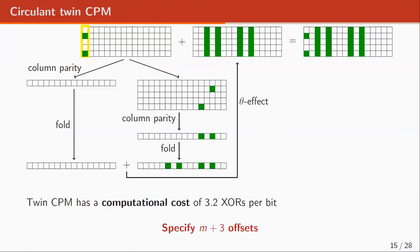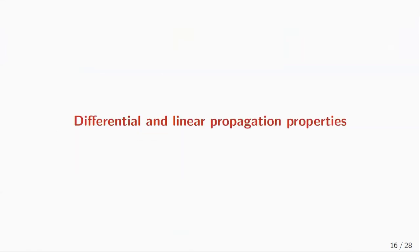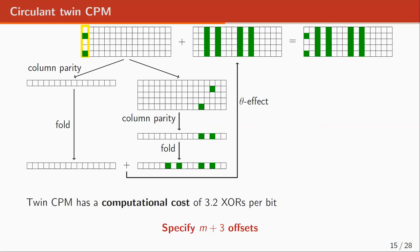Our twin CPM is a generalization of the CPM where, instead of one column parity, we have two. The first is computed as before, and the second is obtained after shifting over some offset. We compute the column parity of the shifted state, fold it, and add the two folded parities together to obtain the theta effect that is added to the input state to get the output state. The twin CPM has a computational cost of 3.2 XORs per bit, like ASCON, and we need to specify m plus three offsets.